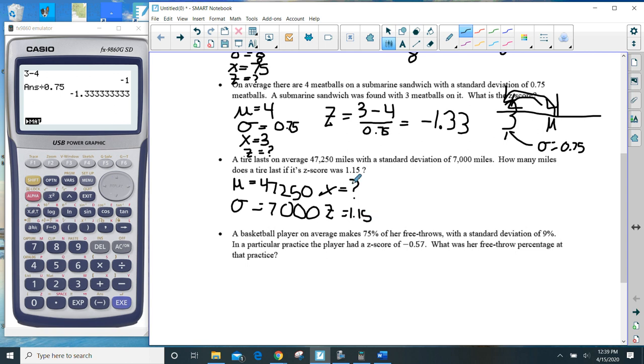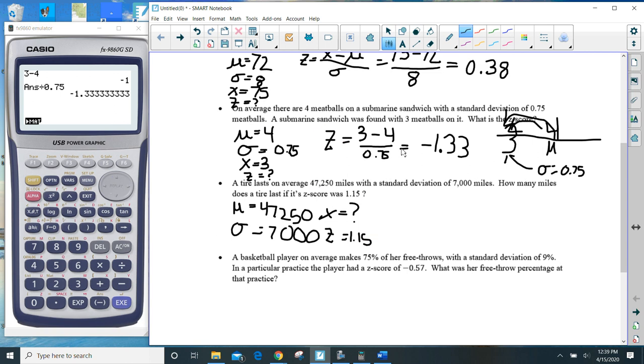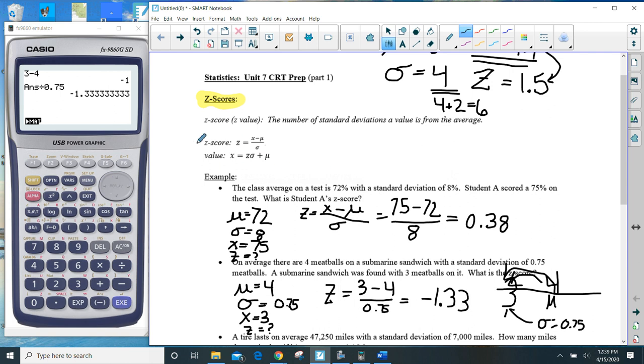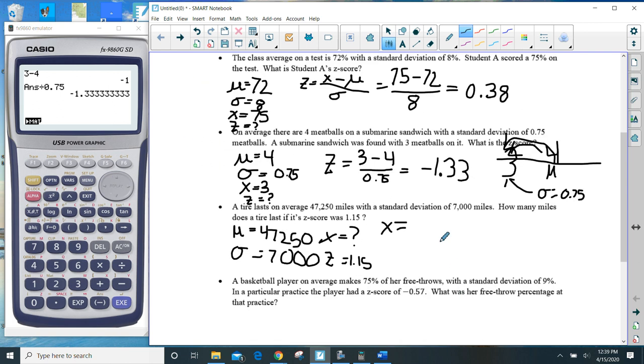So here we're not solving for Z like we were in these previous two. Here we are asked, what the heck is the actual value, X? And so I go back up to these formulas up here. And I see X is equal to Z sigma plus mu.